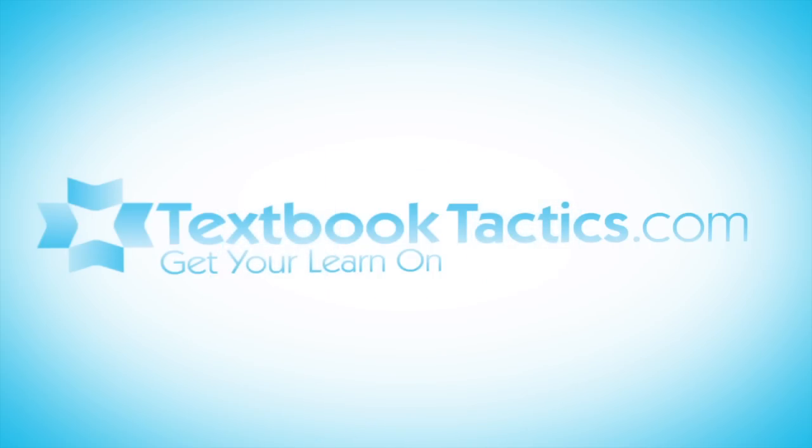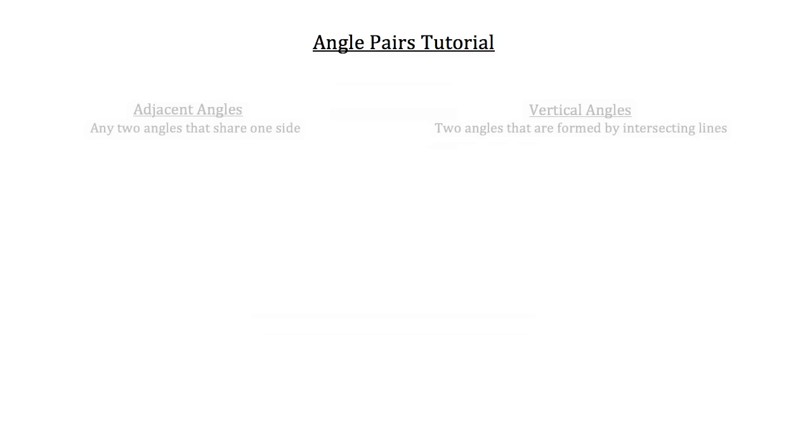This is the angle pairs tutorial. The first two types of angles I'd like to discuss with you today are adjacent angles and vertical angles.